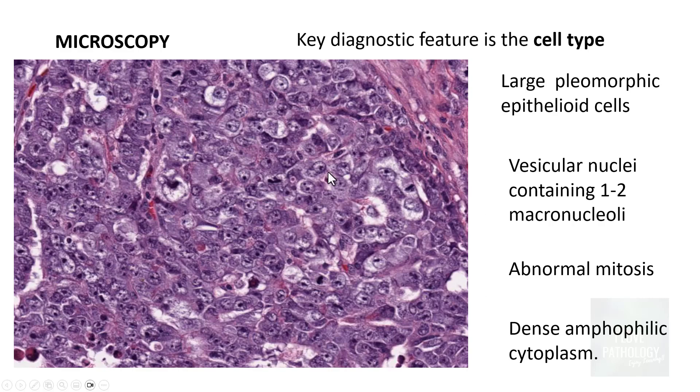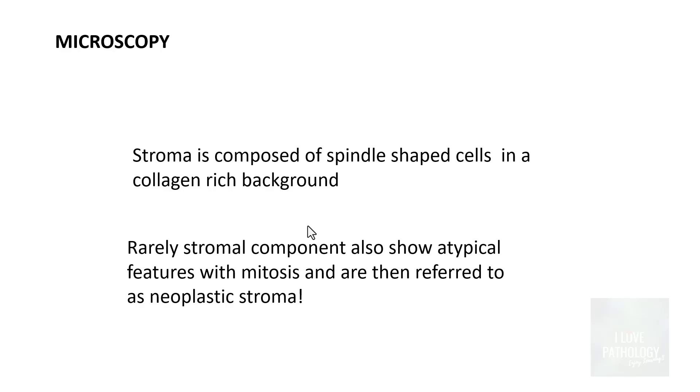This is a very characteristic feature of embryonal carcinoma: large pleomorphic epithelioid cells, prominent nucleoli or macronucleoli. And then stroma is composed of spindle shaped cells and the background is collagen rich. Sometimes even the spindle shaped cells show atypia along with mitosis and then that kind of stroma is called as neoplastic stromal component. So stromal component can be neoplastic stromal component or even non-neoplastic where it's just bland spindle shaped cells.